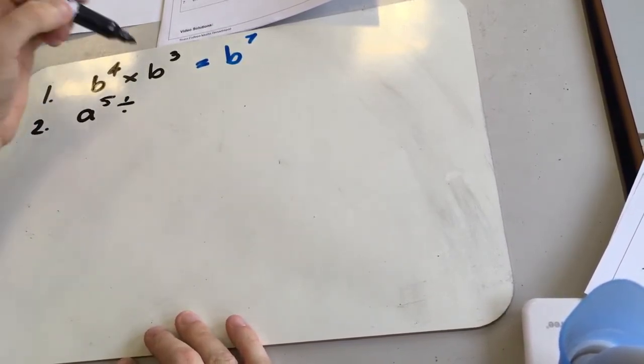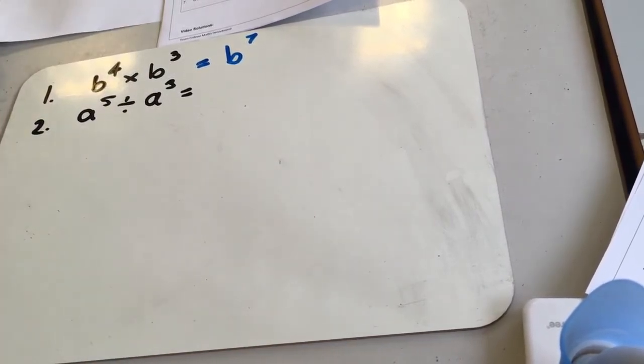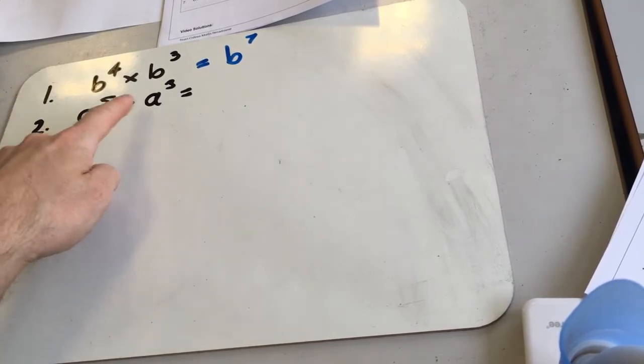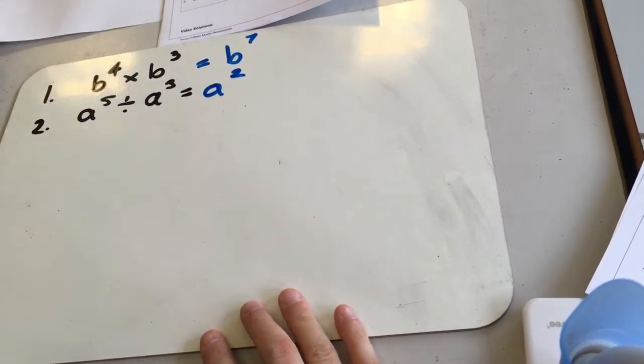Next one, we've got a to the 5 divided by a to the 3. So when you're dividing things with the same base and different powers, you're going to subtract these two powers. So we're going to get a to the power 2. 5 take 3 gives us 2.